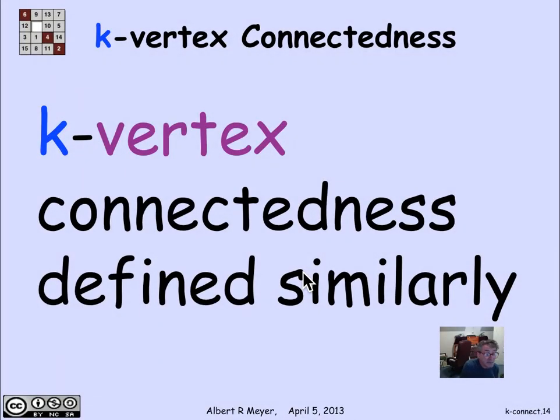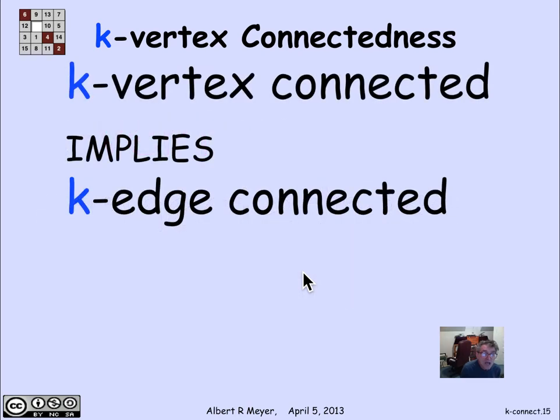There's a corresponding definition of vertex connected, meaning it's k-vertex connected if you can remove any number of vertices up to k and it will stay connected. If it's k-vertex connected, it's certainly k-edge connected, but not conversely.